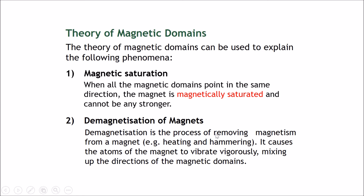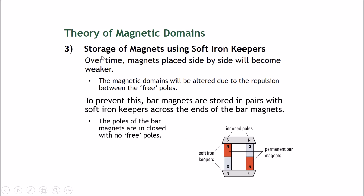Demagnetization is the process of removing magnetism from a magnet. This causes the atoms of a magnet to vibrate vigorously, mixing up the directions of the magnetic domains. Over time, magnets placed side by side will become weaker due to repulsion between like poles. To prevent this loss in magnetism, we store bar magnets in pairs with soft iron keepers across the ends.